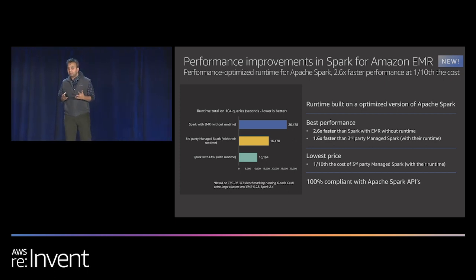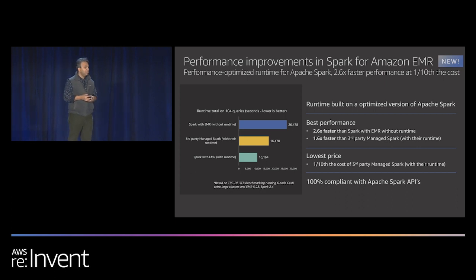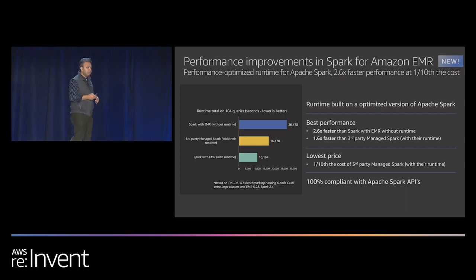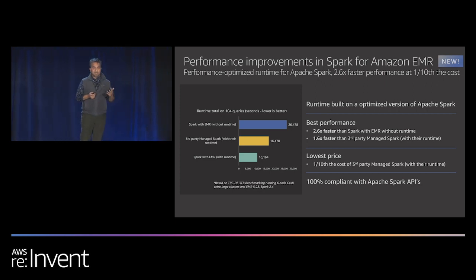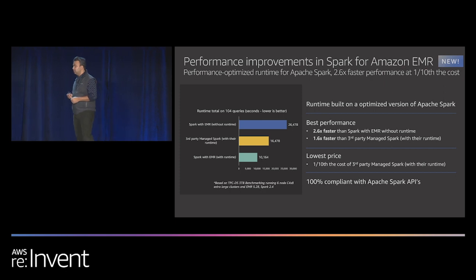When we compare ourselves to the version we had last year — which was without the runtime and was plain vanilla open-source Spark — we are roughly about 2.6 times faster with the runtime environment. Comparing Spark 2.4 vanilla last year to this year, there is a significant performance improvement.